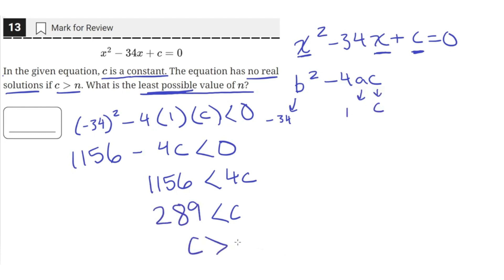So this means that c has to be greater than 289. Because if c is greater than this number, this makes the discriminant negative.